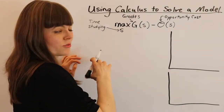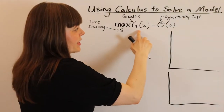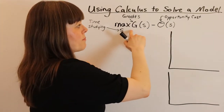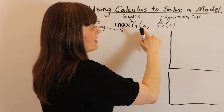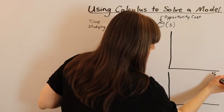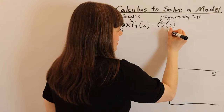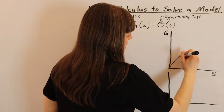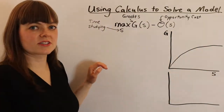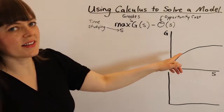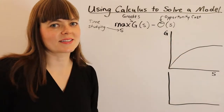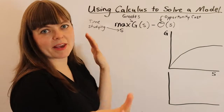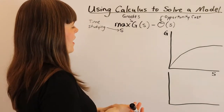If we're going to actually use numbers in this, we need to replace these functions with functional forms. That's not too difficult because we know the basic shape of each of these. The grades shape - if we have studying on the x-axis, our choice variable, and grades as our benefit on the y-axis - we know that graph has a shape with diminishing marginal benefit, and we recognize that shape looks a little bit like a square root function.